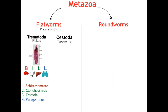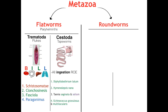Next up we have cestoda, or tapeworms, which are by far the largest parasites that we deal with — these can actually be seen with the naked eye, unlike most of the rest. They all share the same route of entry, which is ingestion. Starting off with Diphyllobothrium latum, Hymenolepis nana, the Taenia species with saginata and solium, and the Echinococcus species with granulosus and multilocularis. Notice how they're all green — they all have the same route of entry, ingestion, and most of them, except solium, primarily infect the GI system. The exception is solium, which is responsible for neurocysticercosis.